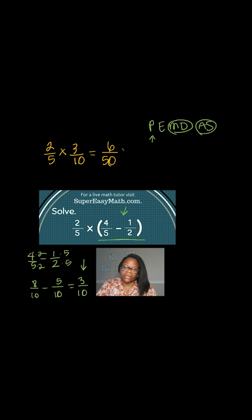Now I can divide by 2 on my numerator and denominator, and I'm left with 3 over 25. And that is my final answer for this problem.